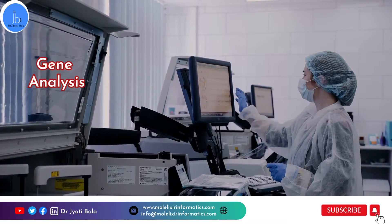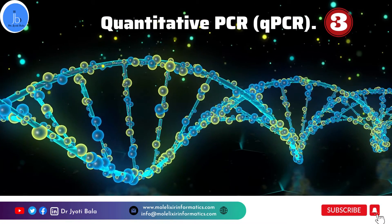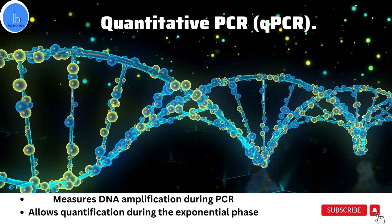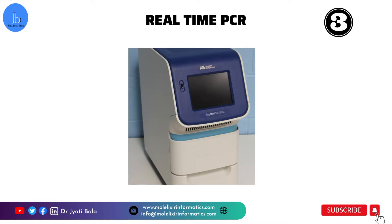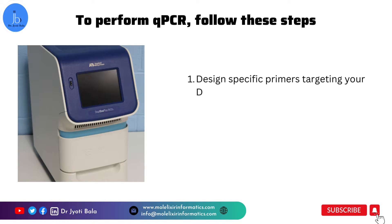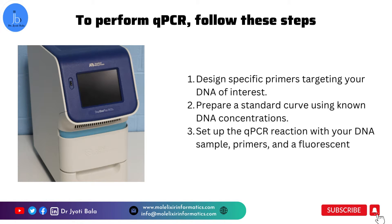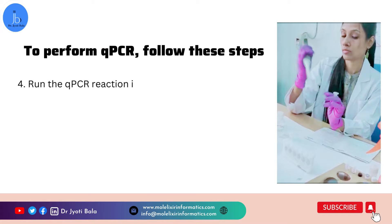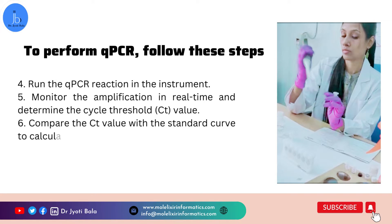Moving on, we have quantitative PCR, or QPCR, an efficient technique for quantifying DNA in real time. QPCR measures DNA amplification during PCR, allowing quantification during the exponential phase. You require a real-time PCR instrument for this. The key steps are: design specific primers targeting your DNA of interest, prepare a standard curve using known DNA concentrations, set up a QPCR reaction with your DNA samples, primers, and fluorescent dye, run the reaction in the instrument, monitor amplification in real time, and determine the cycle threshold (CT value). Finally, compare the CT value with the standard curve to calculate the DNA concentration.